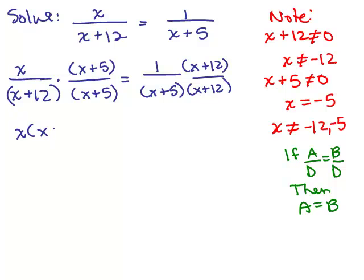So x times x plus 5, this numerator on the left-hand side, must be the same as the numerator on the right-hand side, since they were both over the same denominator. We've got to simplify the left-hand side: x squared plus 5x equals x plus 12. We've simplified both sides.